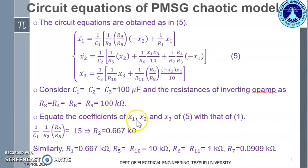Now, what do we do? We equate the coefficient of x1, x2 and x3. For instance, the coefficient of x2 is 1 by C1 into 1 by R2 into R9 by R8 and in the original equation 1, the coefficient of x2 was 15. So we equate it to 15 and get the value of R2 as 0.667.